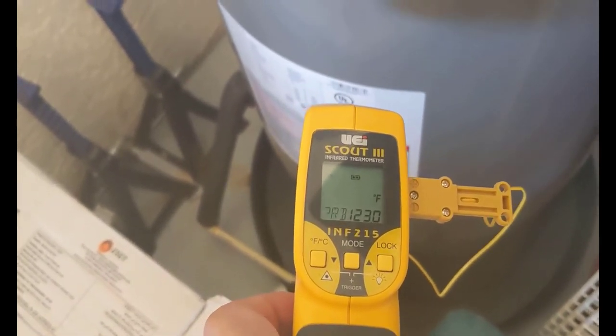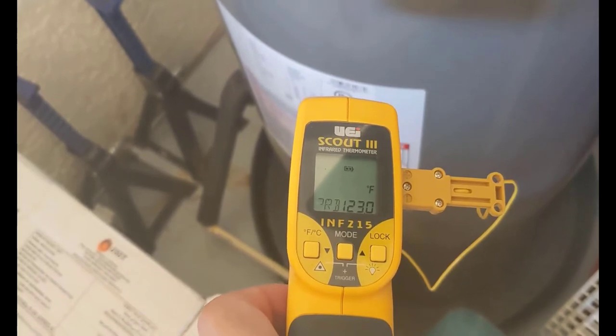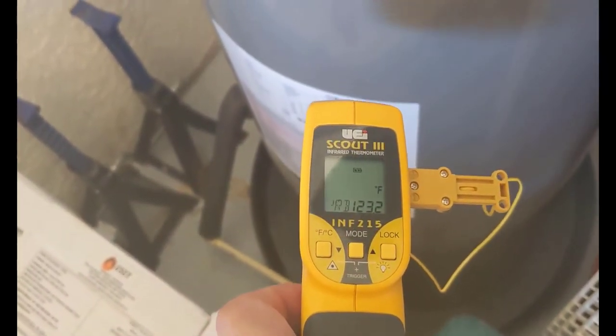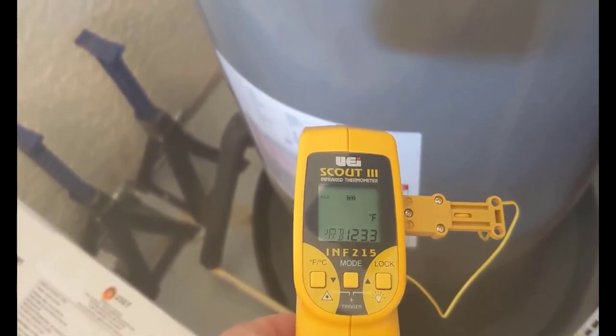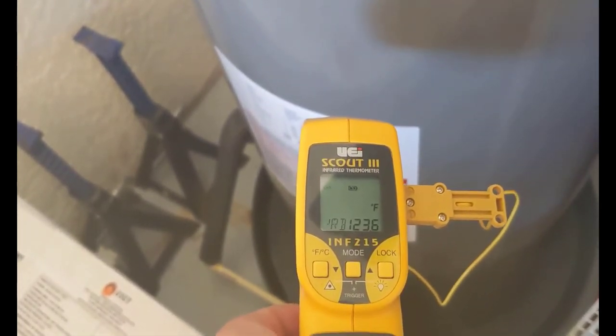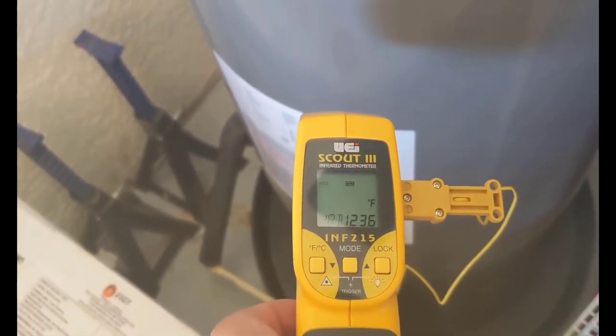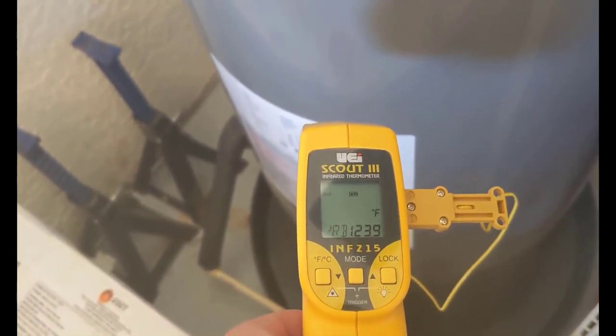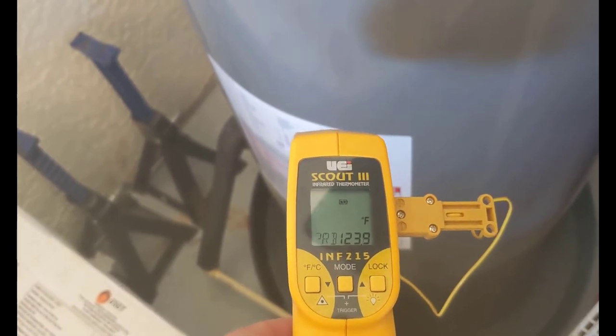So we're easily getting a 30 plus degree rise just by doing something you do all summer long anyway which is cool the house. So as you're running the air conditioning inside the house, the heat exchanger is taking the heat from that wasted heat from the air conditioner and using it to heat your water. So right now we're getting 30 degree plus rise easily.